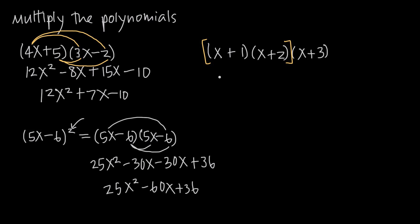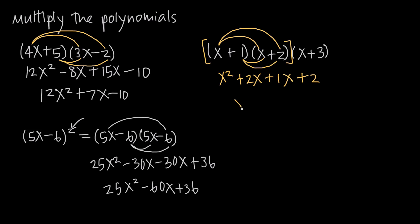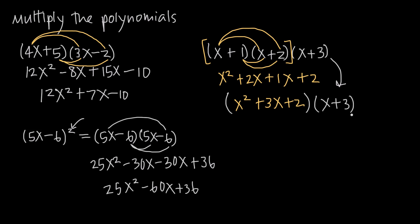Multiplying x plus 1 times x plus 2: x times x gives us x squared, x times positive 2 gives us plus 2x, 1 times x gives us plus 1x, and 1 times 2 gives us positive 2. Combining like terms, 2x and 1x combine to give us 3x, so the result is x squared plus 3x plus 2. Now we put this in parentheses and bring back in our x plus 3.